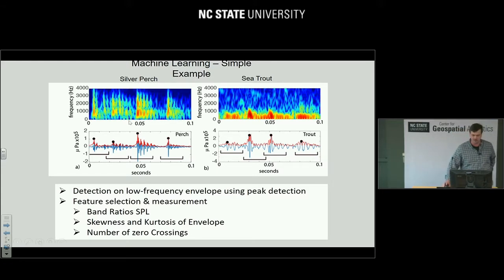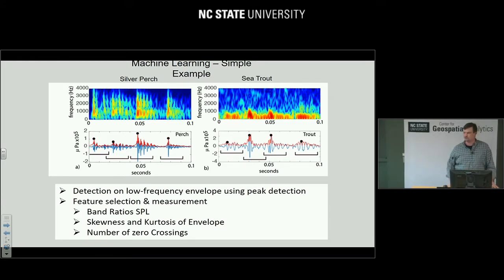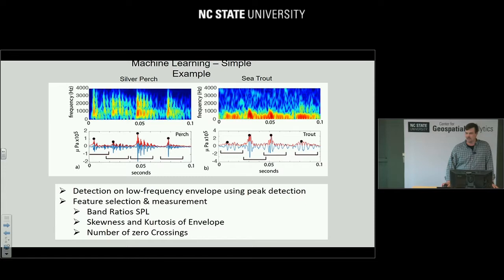Here's a simple example of where we're heading. A silver perch call and a sea trout call look very different in spectrograms — you could train a child to distinguish them visually. But if I try to use energy in the 500–1000 Hz band or just pick peaks of the envelope, I detect both and can't tell them apart. Having made initial detections, the key step is classification — figuring out what species it is. So after identifying candidate calls, I do feature selection: ratio of power in different frequency bands, skewness or kurtosis of the envelope, zero-crossing rate — simple features fed into a statistical learning routine like a decision tree.